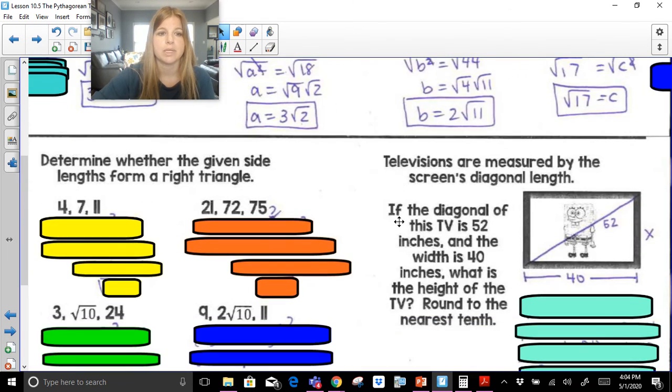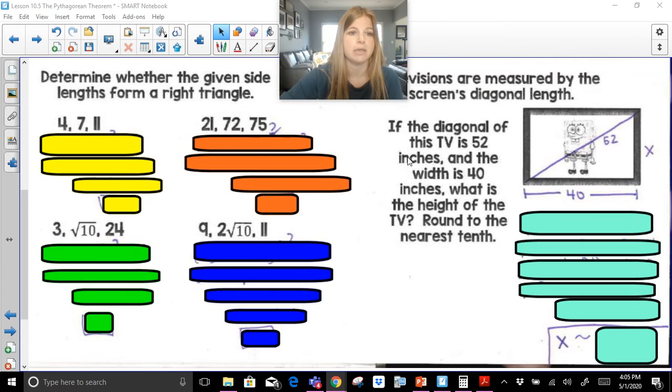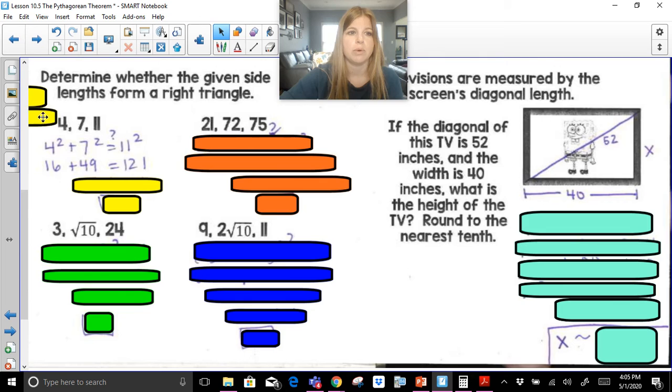So now, determine whether the given lengths form a right triangle. So if I was to take 4, 7, and 11, and plug those into the Pythagorean theorem, does 4 squared plus 7 squared equal 11 squared? Well, take a look what happens. It becomes 16 plus 49 equals 121, which definitely does not equal each other. So the answer would be no,